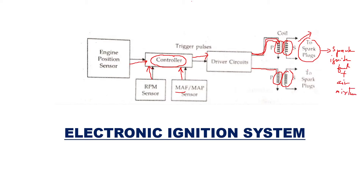That spark ignites the fuel plus air mixture, because of which power is developed, the piston starts moving up and down, that linear motion is converted into rotary motion by a crankshaft, and that rotary motion makes the vehicle move — it is transferred to the wheels of the vehicle.